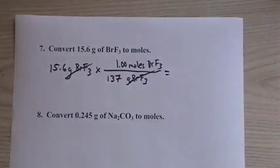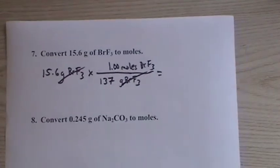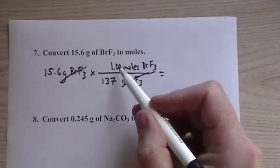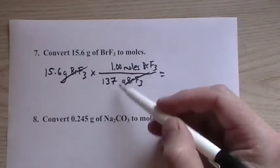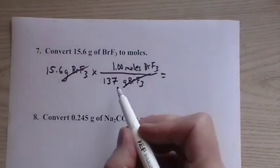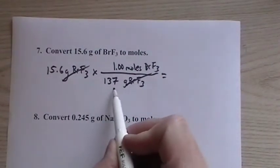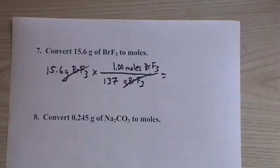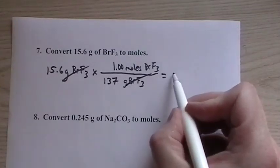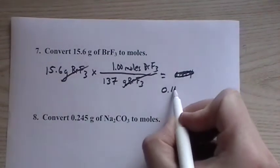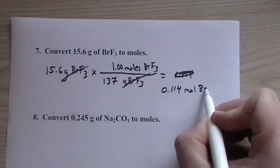Grams cancel, we're left with moles. 15.6 divided by 137. This is three significant figures, so you want to make sure this has that many significant figures or more, so you don't lose them in the end. Since we can make this as many significant figures as we want from the periodic table, if we have three here we should have three here. We end up with 0.114 moles of bromine trifluoride.